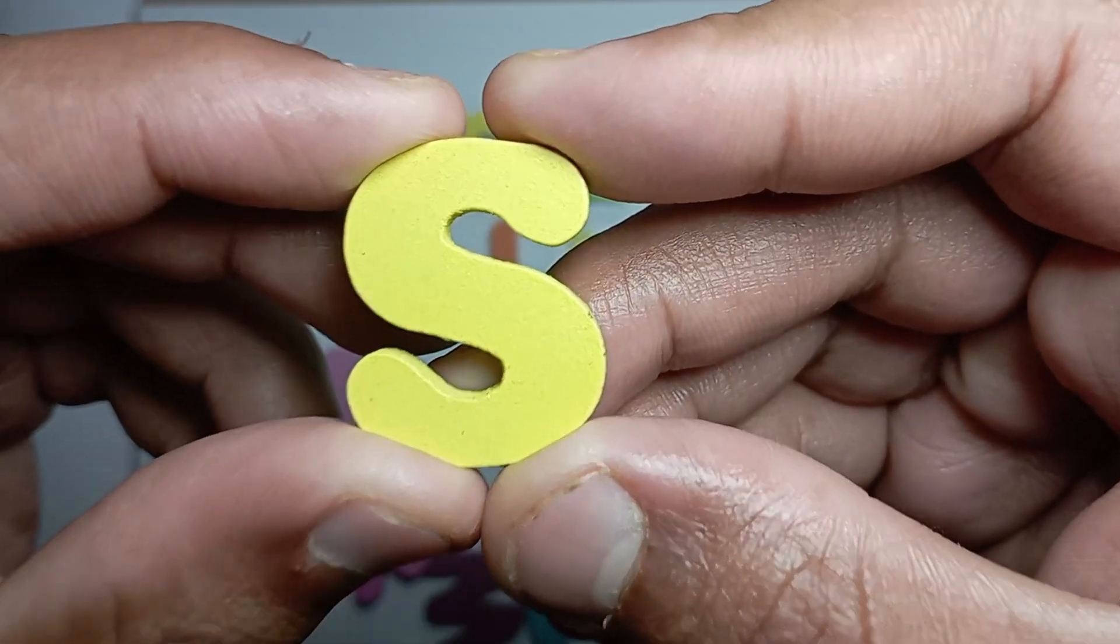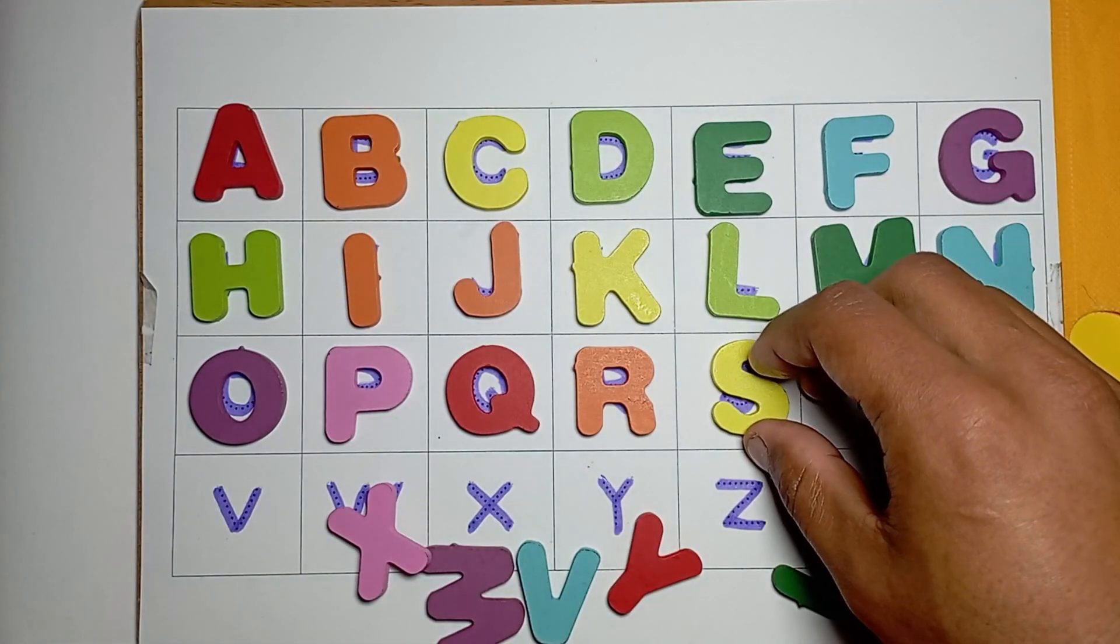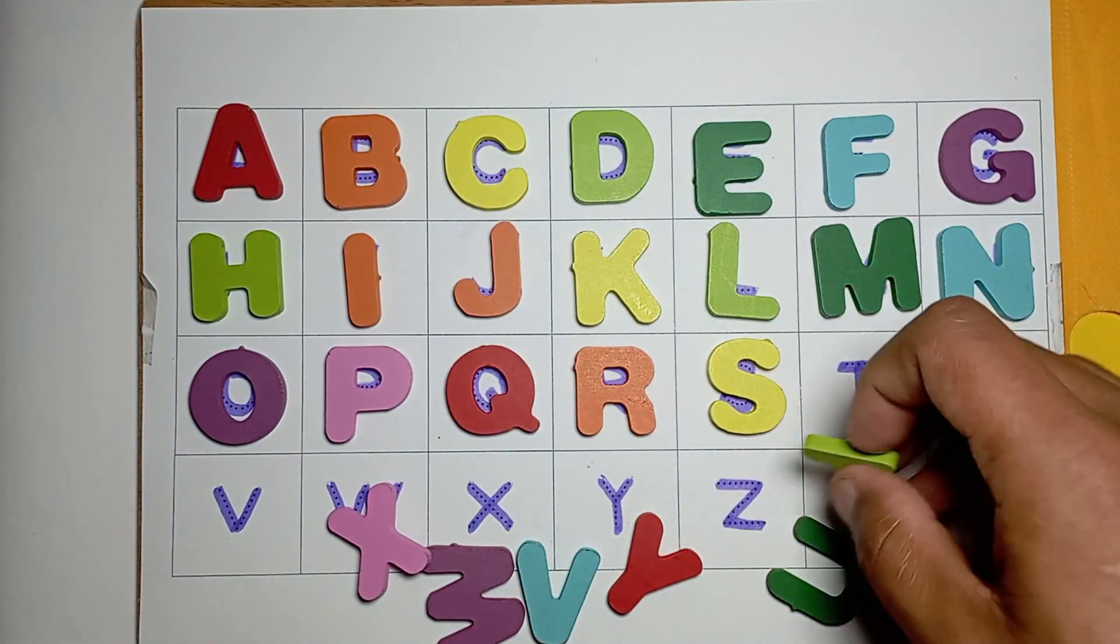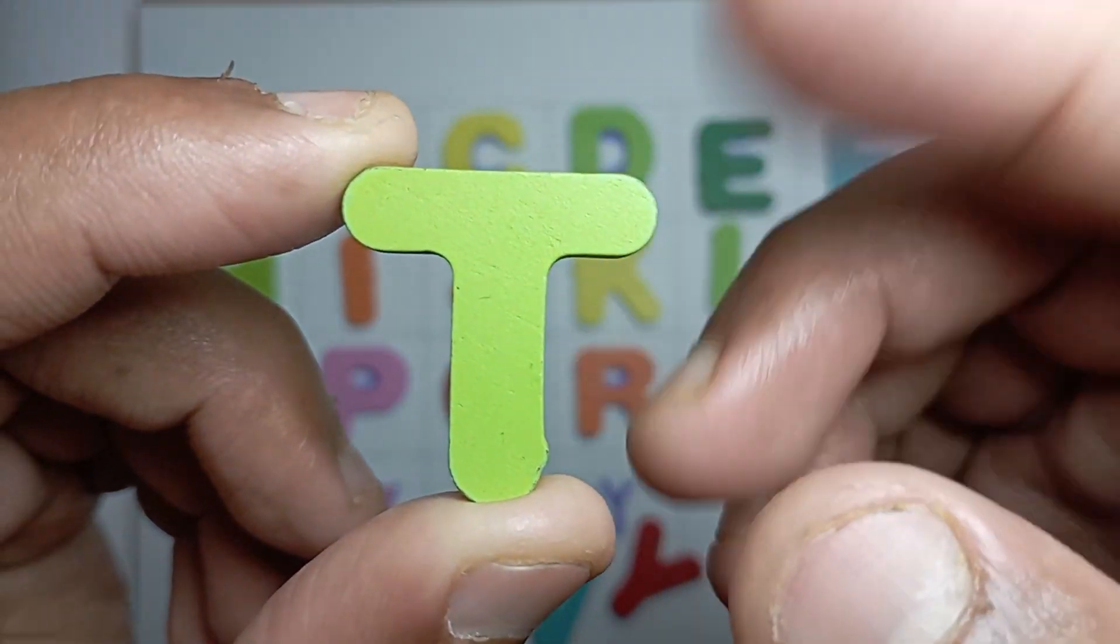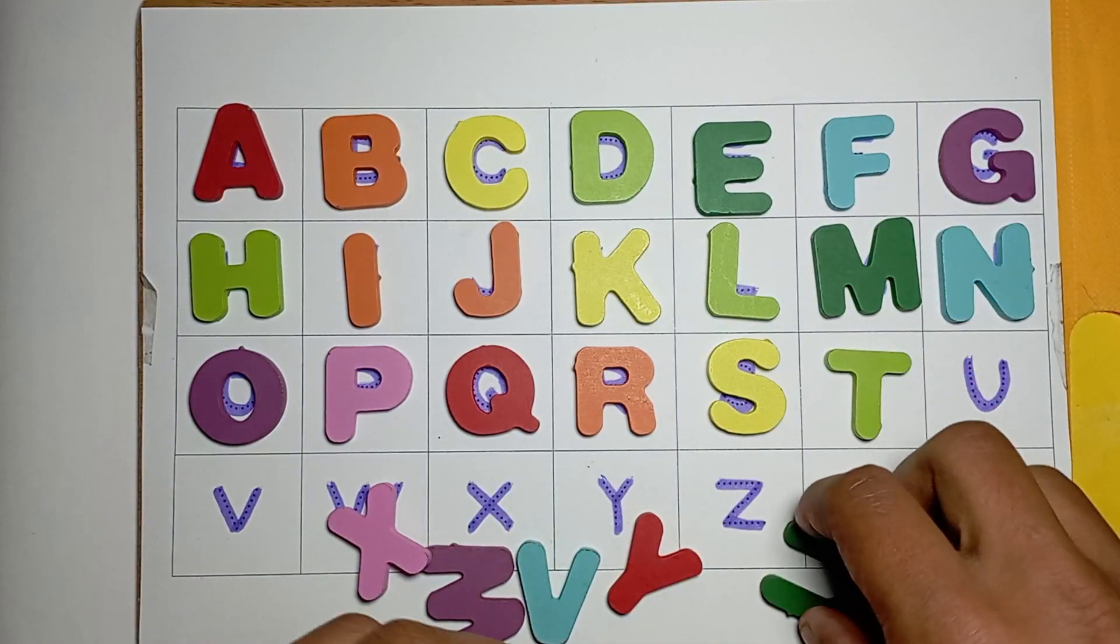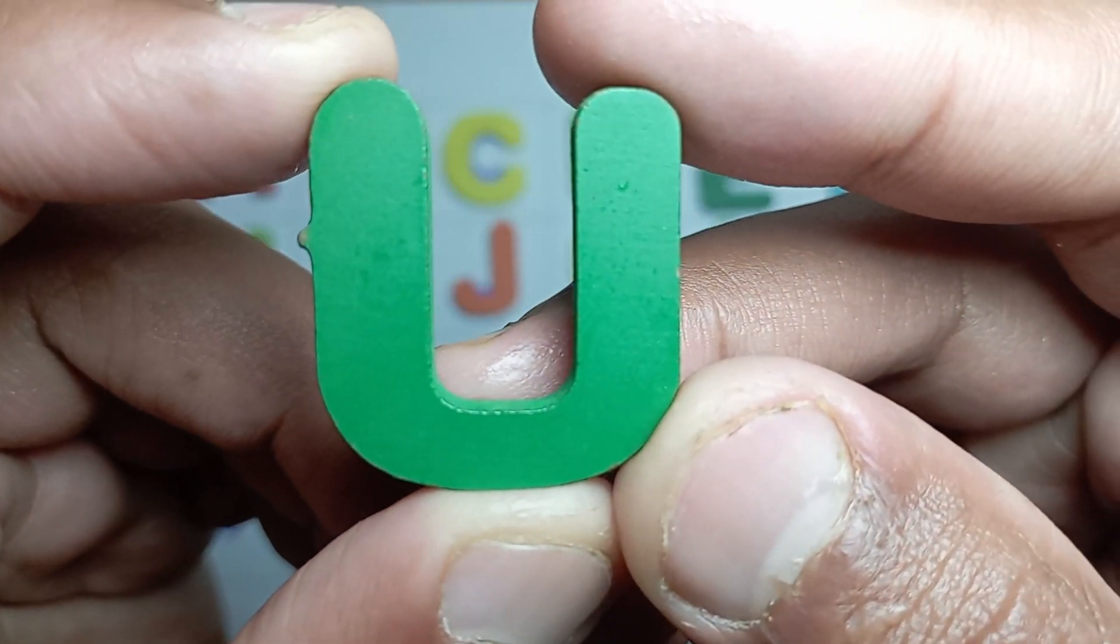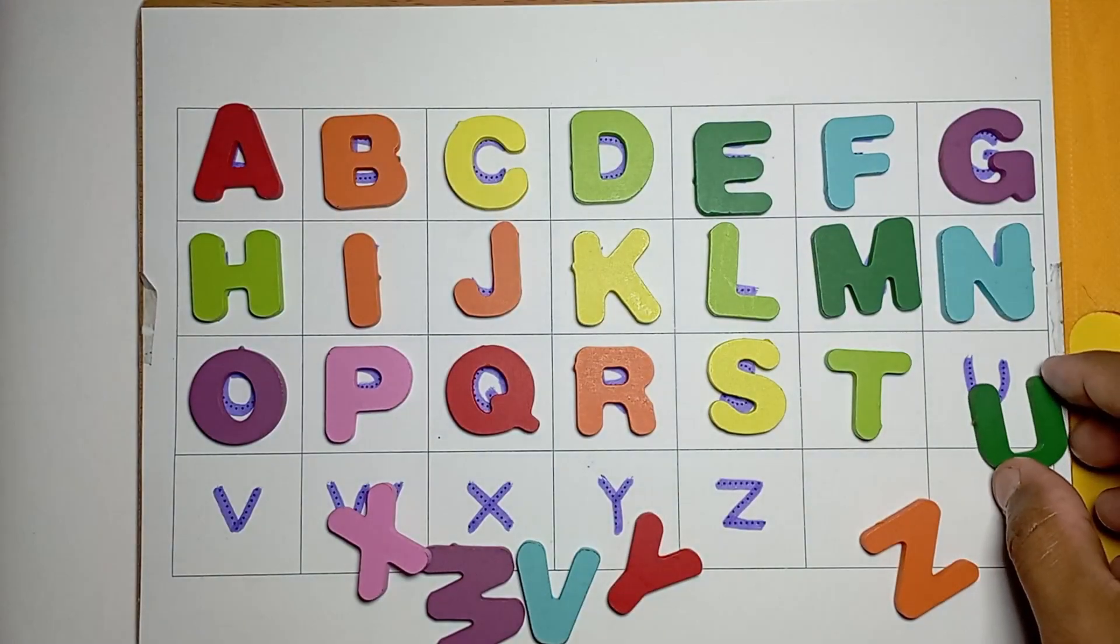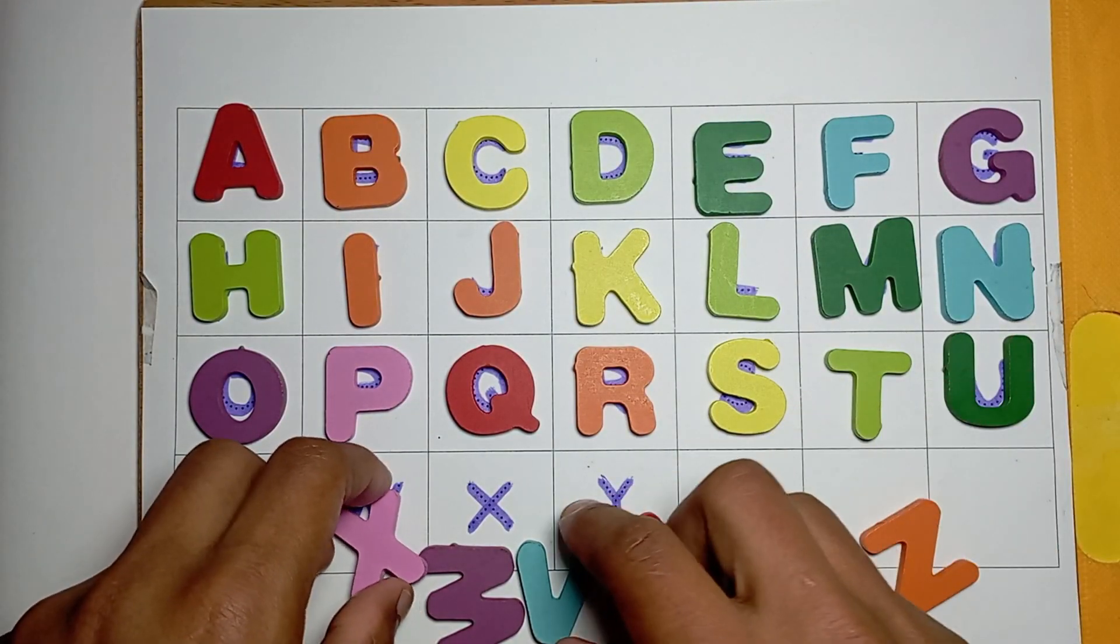S, S for sun, S for sun. T, T for tiger, T for tiger. U, U for umbrella, U for umbrella.